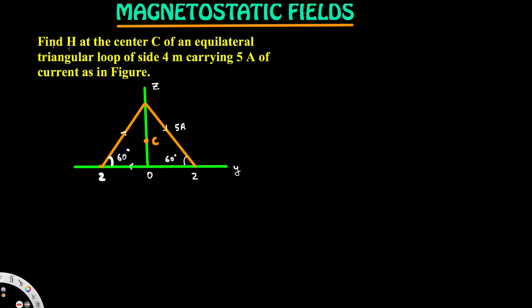To find H, let's look at the orientation. Since this is an equilateral triangle, we can obtain the total magnetic field intensity by adding all the contributions from each side. So H equals H1 plus H2 plus H3. Since it's equilateral, all sides are equal, so H1 equals H2 equals H3, and we can write H equals 3H1.